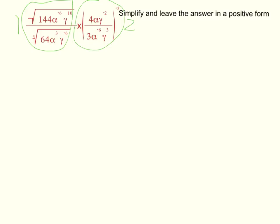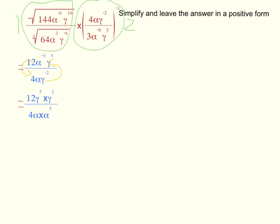Let's get started with section 1. After square rooting the numerator and cubing the denominator, you should get the answer of 12, a to the power of negative 3, y to the power of 5, over 4, a to the power of negative 2. Going back to the question, it asks us to leave the answer in a positive form. So any negative pronumerals we move to the bottom — a to the power of negative 3 needs to go to the bottom, and a to the power of negative 2 needs to go up. After making the negative indices positive, this should be your answer.